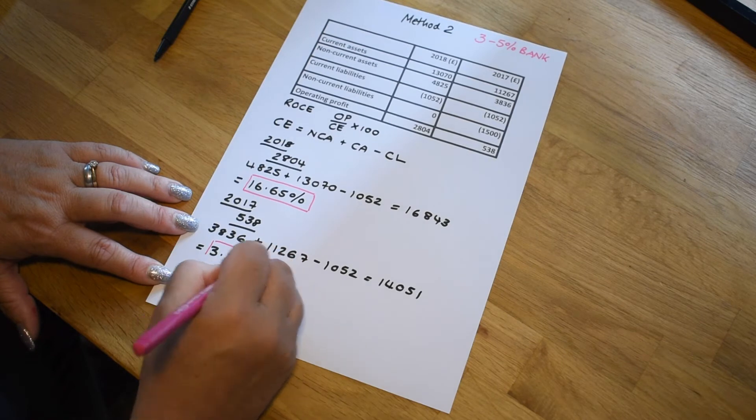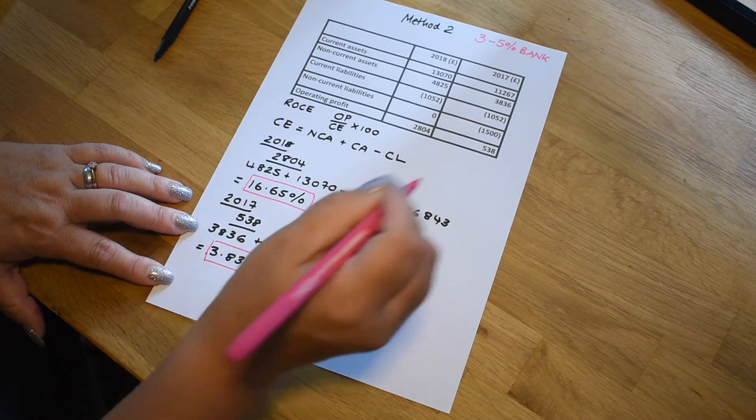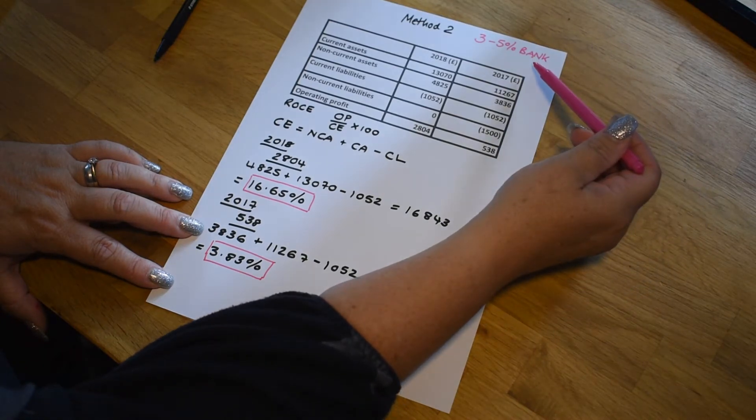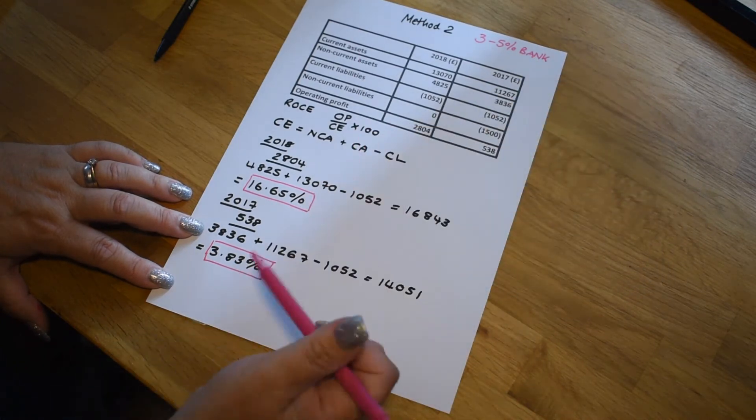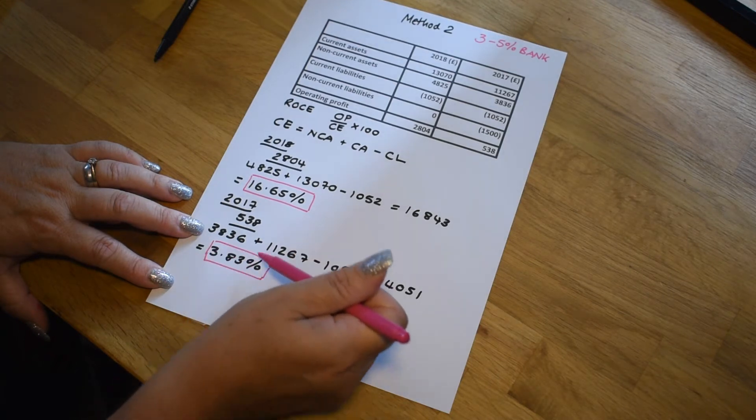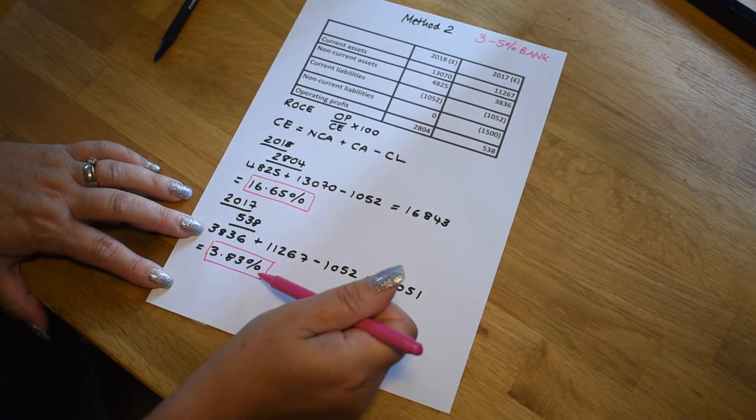So let's look at those two results. So bank account, nice and secure. Money is guaranteed, three to 5% return. Here, this particular business in 2017 was just about getting around about the 4% mark. Again, not a safe investment because money can go up as well as down. So we wouldn't recommend that this year.